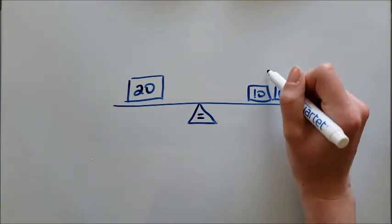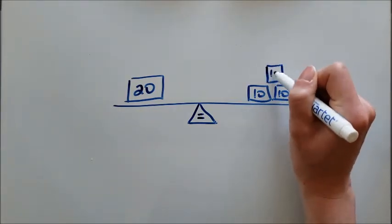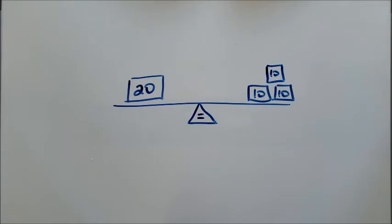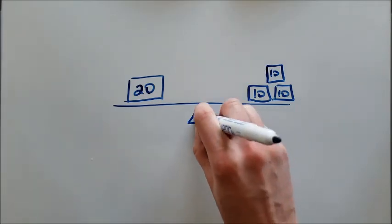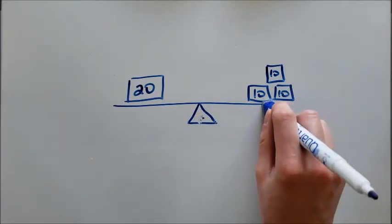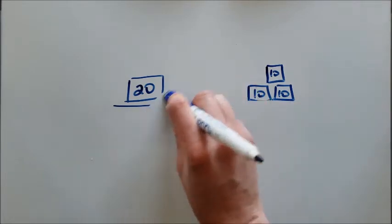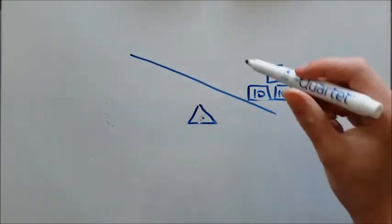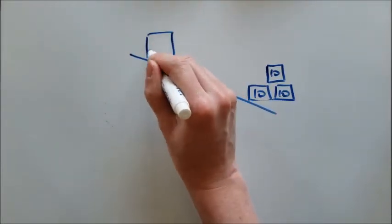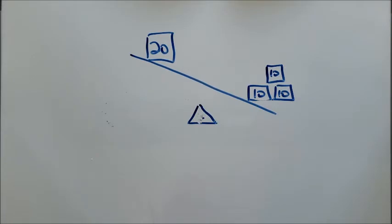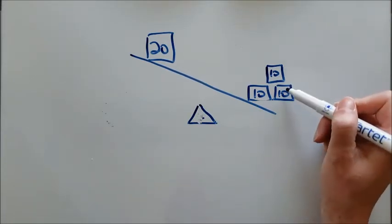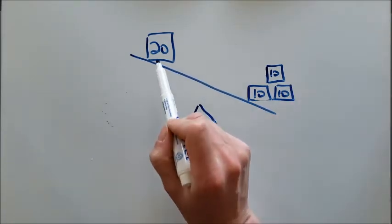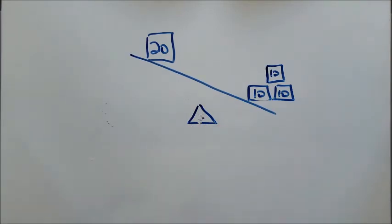Because if I were to all of a sudden add a third box on here, this is not going to look the same. So if I add a third box, just like a teeter-totter or a seesaw, all of a sudden I'm going to have a scale that looks like this instead. Because this side is heavier, it's 30 instead of just 20. So when we're doing this, we want to make sure that everything that we do is going to show us some form of equality.